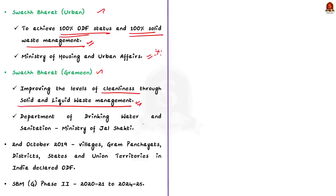It was implemented by the Department of Drinking Water and Sanitation under the Ministry of Jal Shakti. Under the mission, all villages, gram panchayats, districts, states and union territories in India declared themselves open defecation free on 2nd October 2019, on the occasion of the 150th birth anniversary of Mahatma Gandhi, and within 5 years, 100 million toilets were constructed in rural India.